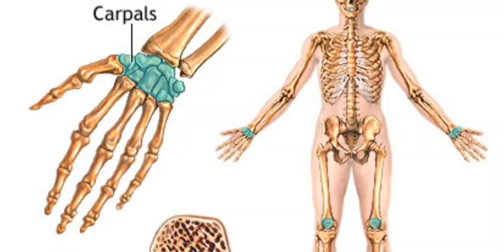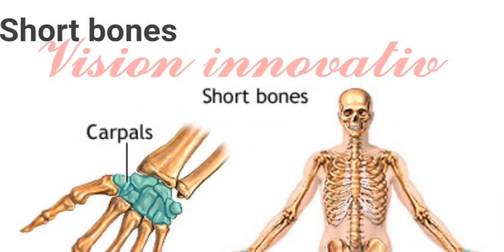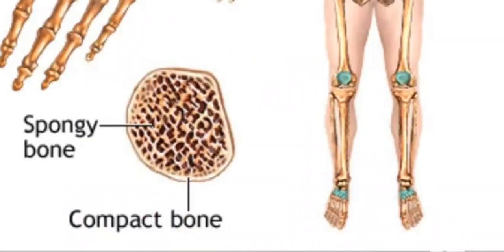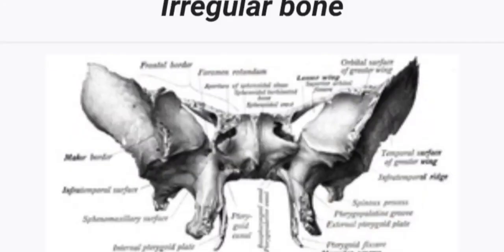The tarsals in the ankles are: calcaneus, talus, navicular, cuboid, lateral cuneiform, intermediate cuneiform, and medial cuneiform. Irregular bones vary in shape and structure and therefore do not fit into any other category.